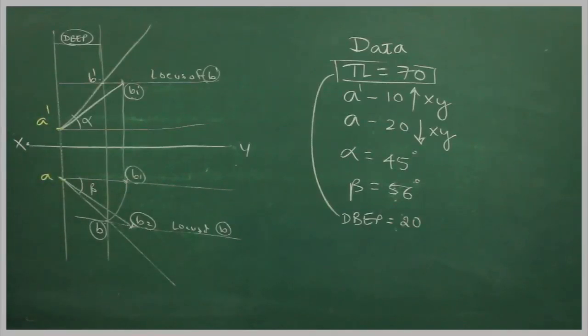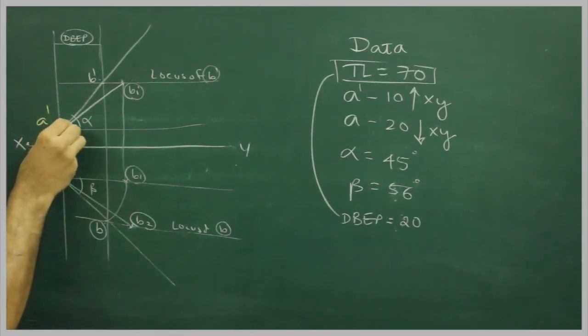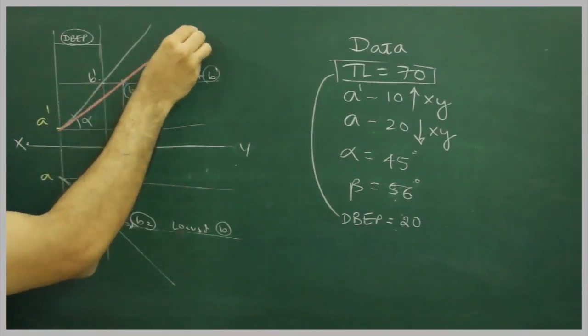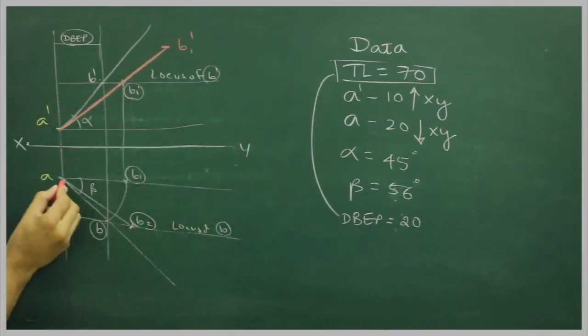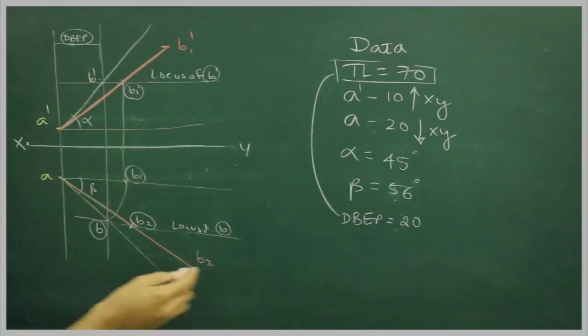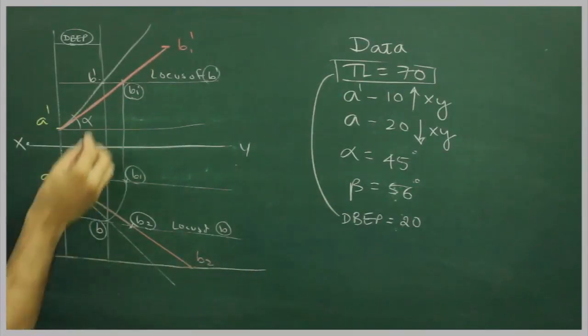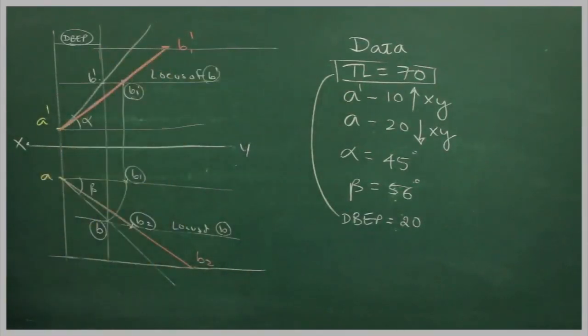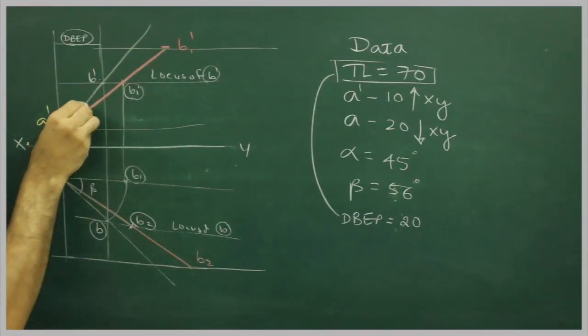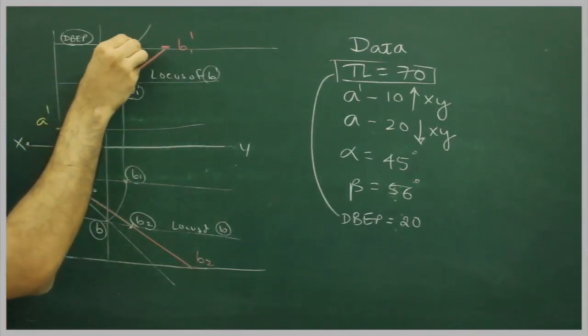So, we will extend on this line, and that would be our original true length. And, of course, we will draw horizontal line. So, wherever it will cut with this extension of A dash, B dash, or A line, this is B2.